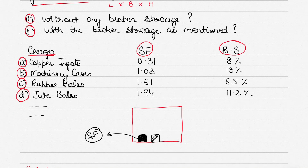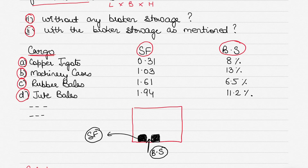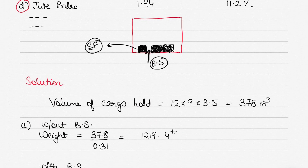Broken stowage is the space lost between two packages of cargo. As soon as you load two units, the space lost between them is broken stowage. Naturally, you must account for that lost space, and you will load less cargo in the presence of broken stowage compared with its absence. Without broken stowage you can load more cargo, as there is no space wasted between units.